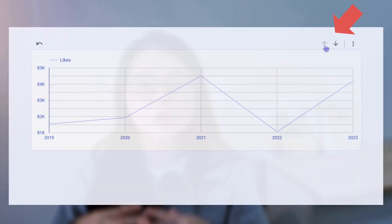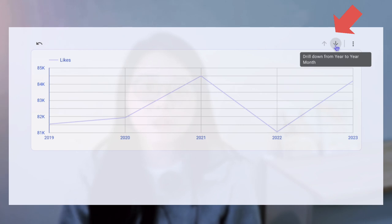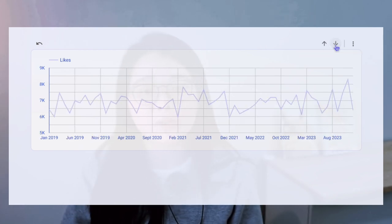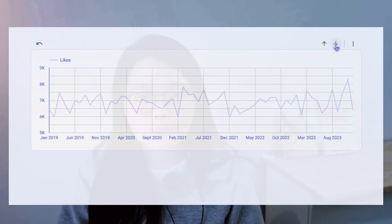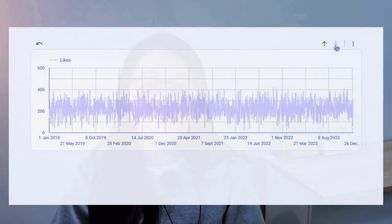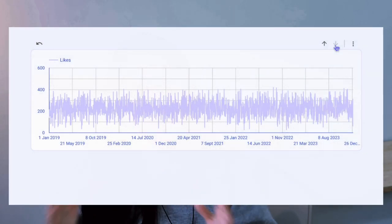This feature allows users to easily navigate through different levels of granularity, such as year, year-month, and date. For example, users can view the yearly trend, then drill down to monthly view, and later drill down again to the daily view to gain deeper insights. This is the first special feature that you get with a date field.